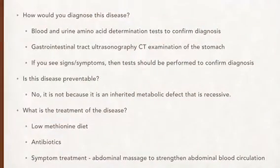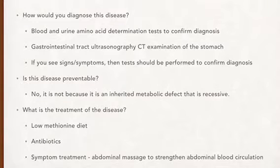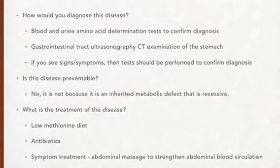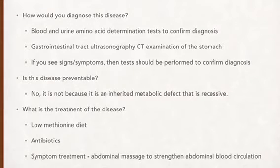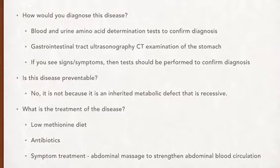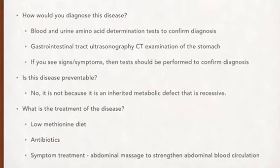Based on all these signs and symptoms, how do you diagnose Oasthouse Urine Disease? You can diagnose this in a number of ways. You can perform blood and urine amino acid determination tests, or gastrointestinal tract ultrasonography CT examinations of the stomach. And since the urine has a distinct odor like hops, you can order tests to confirm the diagnosis. You should also order tests if you see any of the other signs and symptoms discussed on the previous slide.